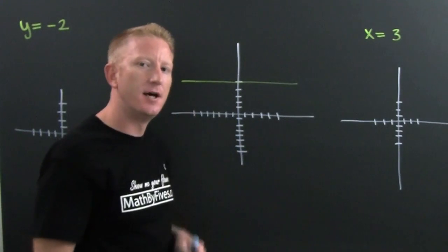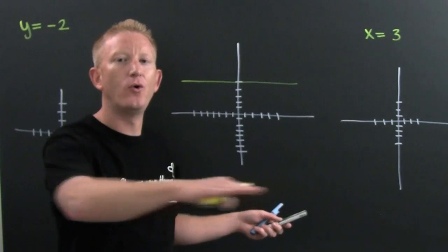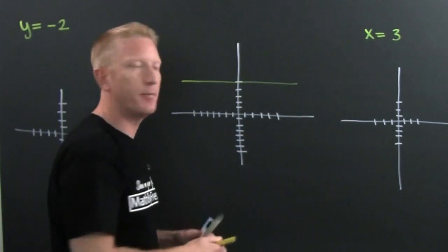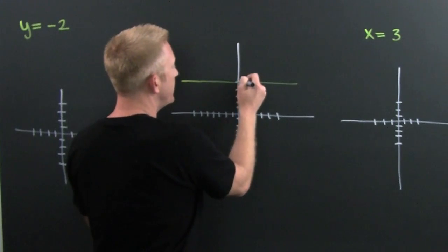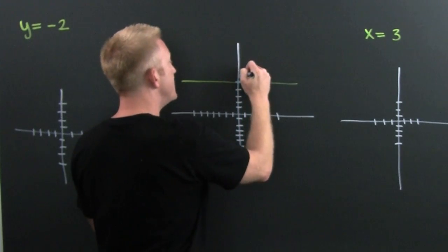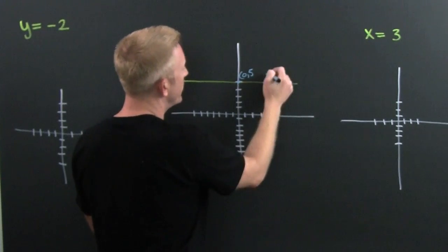Let's look at this line. Is that horizontal or vertical? Horizontal. Let's name a couple of points on this line. What's this point right here? That's the point (0,5). What about this point right here? That's the point (3,5).